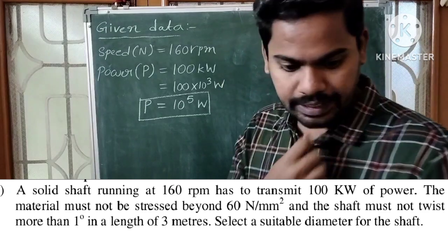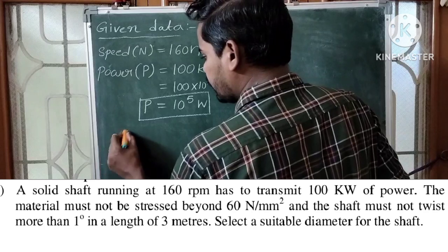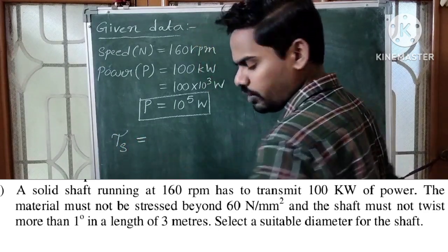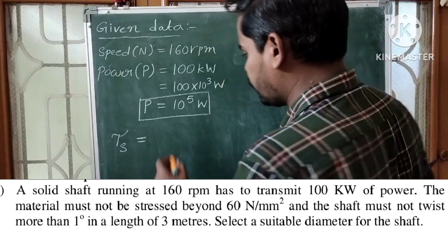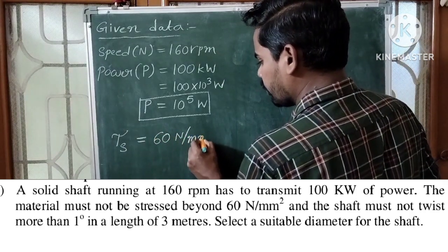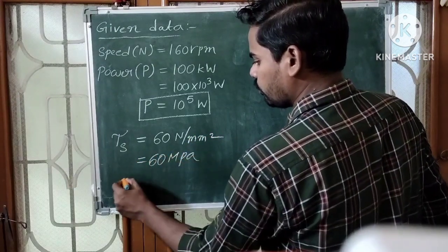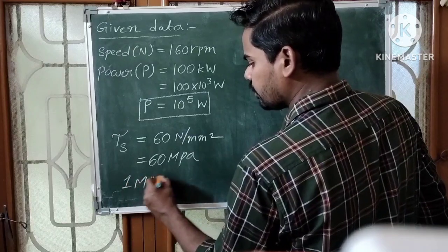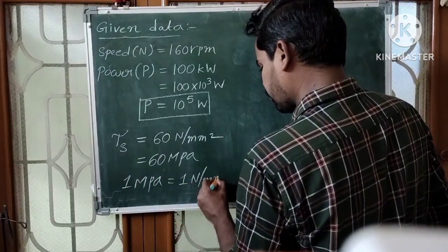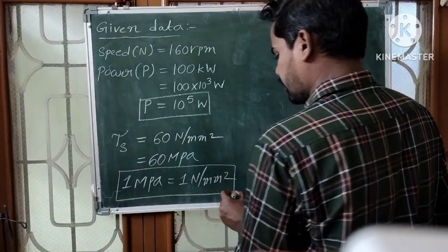Speed is 160 rpm. Next, maximum shear stress is given as 60 MPa, which means 60 newton per mm square. Note that 1 MPa equals 1 newton per mm square.